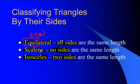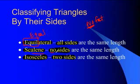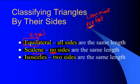When I think of scalene, I think of the nursery rhyme: Jack Spratt could eat no fat, his wife could eat no lean. I think of lean meaning no fat, and because I think of no fat, I think of no sides are the same. It's kind of silly, but scalene means lean meat — no fat means no sides are the same length.